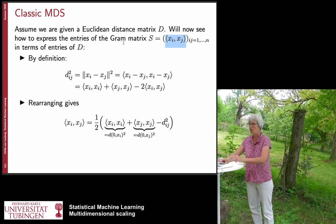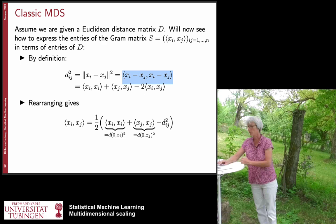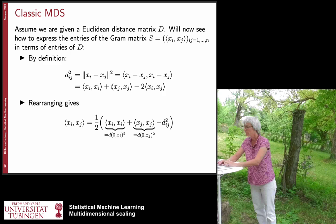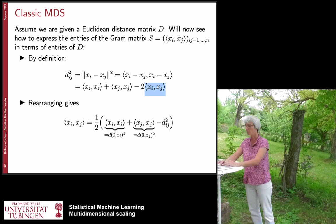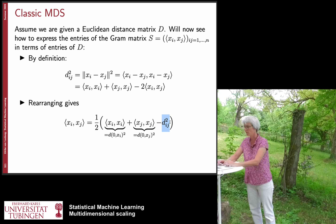In a Euclidean space, we want to compute the scalar product between two points purely in terms of distances. By definition, the squared distance is the squared norm, which equals the scalar product of (xi minus xj) with itself. Expanding this linearly, we get terms involving scalar products of xi and xj with themselves, plus the mixed term. Rearranging, the scalar product between xi and xj equals one half times the quantity: the scalar product of xi with itself, plus the scalar product of xj with itself, minus the squared distance.